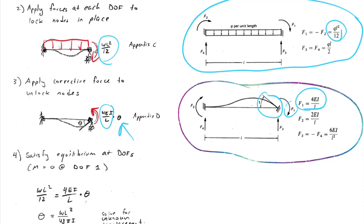In the flexibility method, the main unknown was a force. In the stiffness method, the main unknown is a deflection or a rotation. The main condition that we have to satisfy is given in step 4, and that is equilibrium of the node.